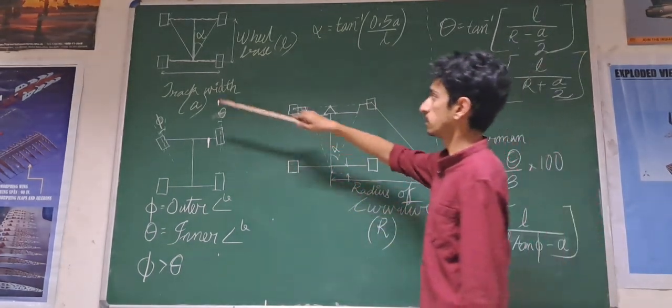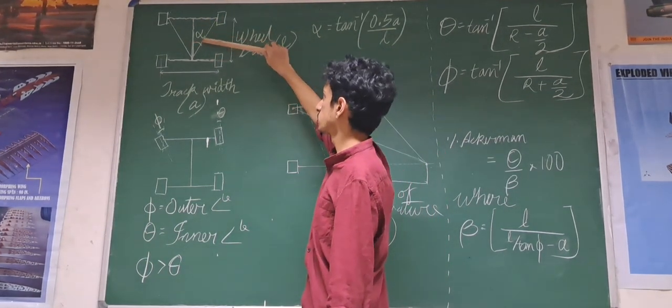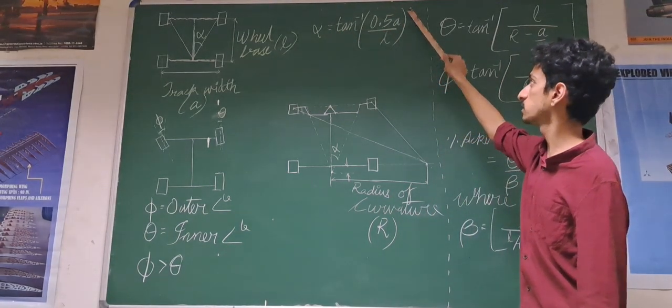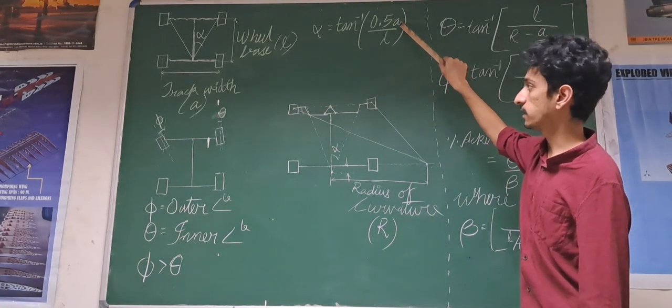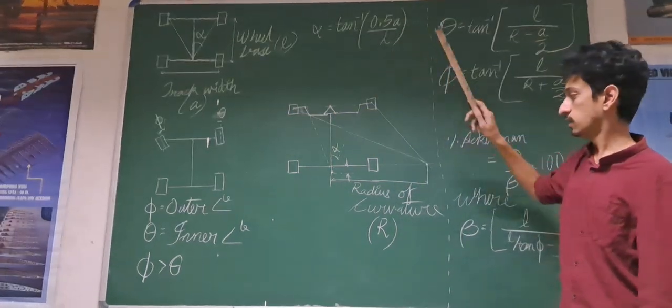Now, we have one more setting or one more angle which is known as alpha. This alpha can be taken as alpha equals tan inverse of half of A, that is half of the track wheel divided by the wheelbase.